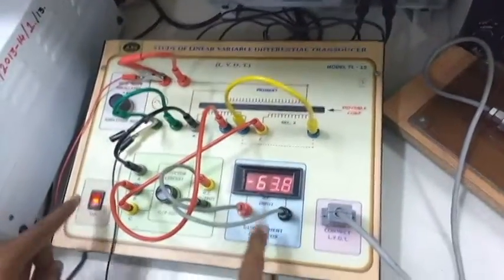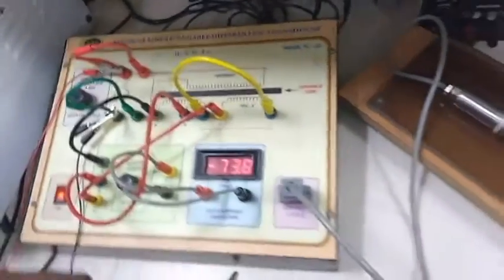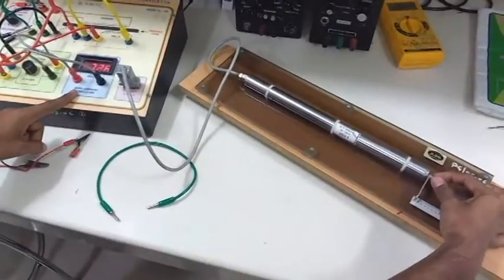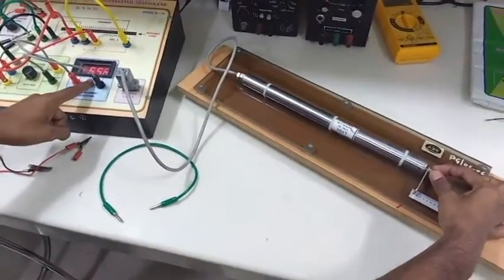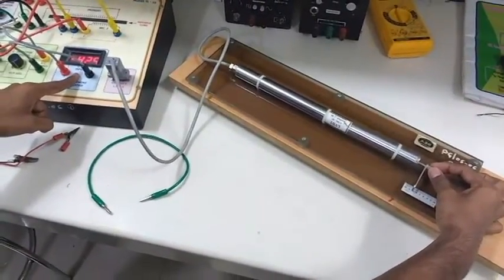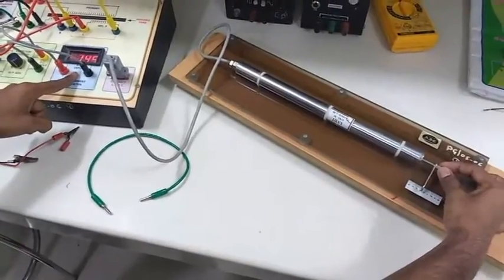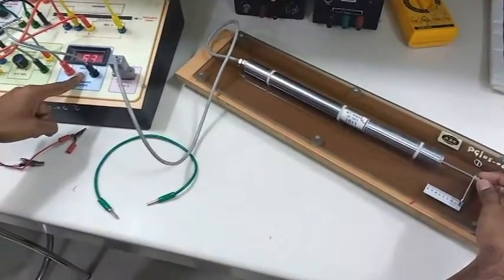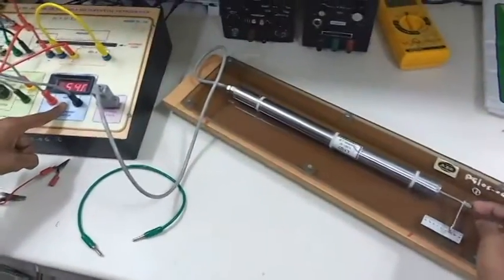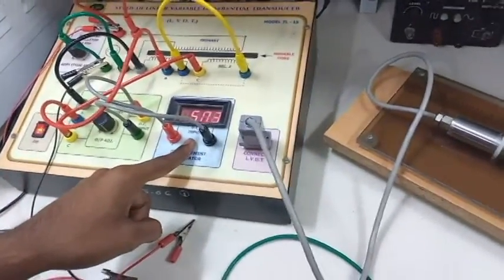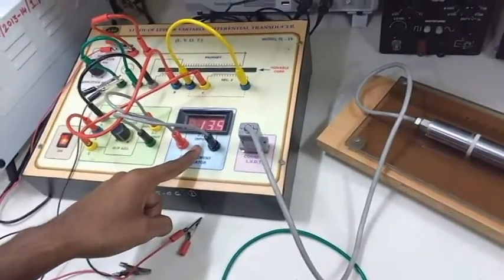And similarly as you take the output for this AC part, you can note down the output for the DC part also and draw the graph. This is a very simple experiment. You can perform it within half an hour. So before performing this experiment, go through the theory. That is beneficial for you. That is it.